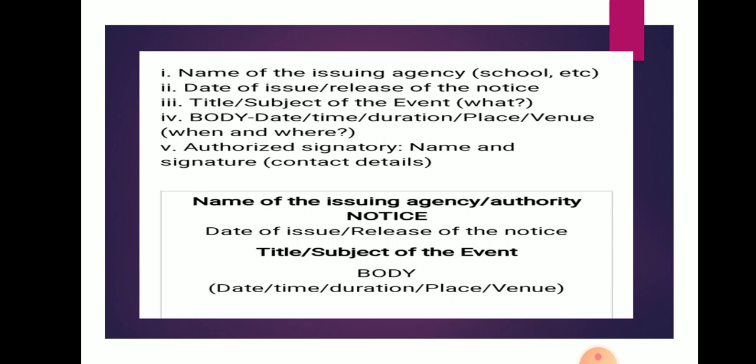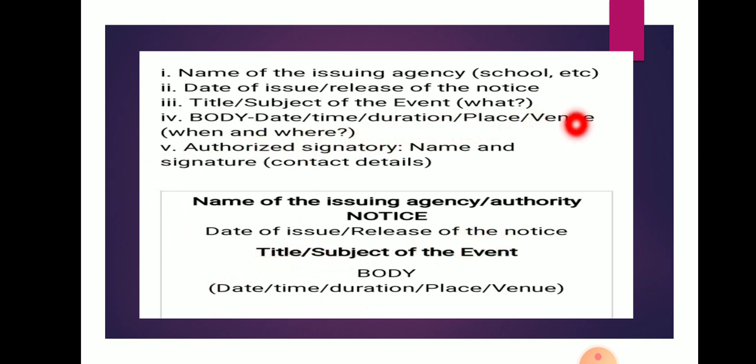The body of the notice contains the date, time, duration, place, and venue of where the activity is going to be held. The fifth step is the authorized signatory — the name, signature, or contact details of the person giving the notice. The format shows the name of the issuing agency in block capitals, followed by the word NOTICE, the date of issue, the title or subject of the event, the body, and all content enclosed within a box — which is very, very important in notice writing.